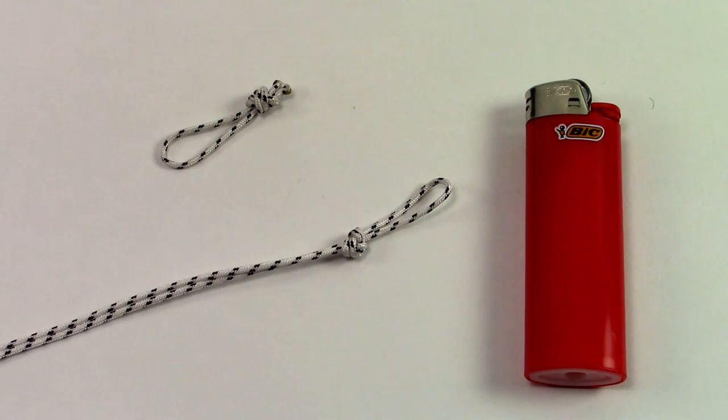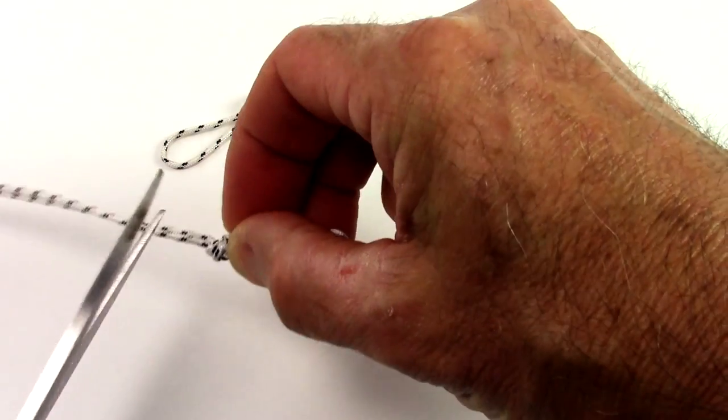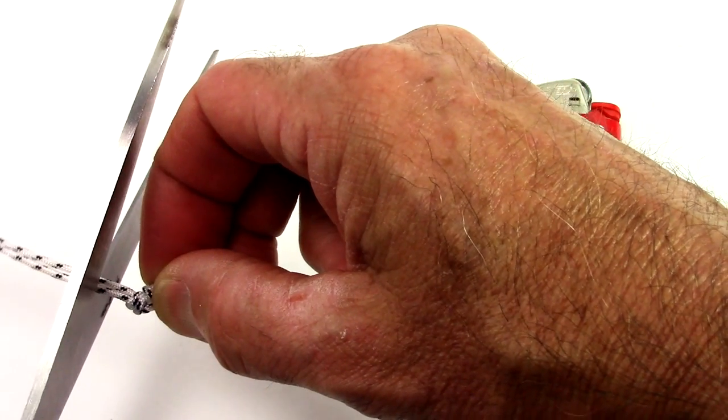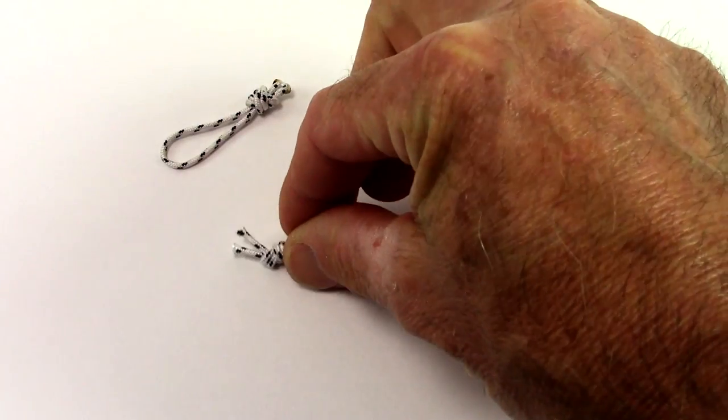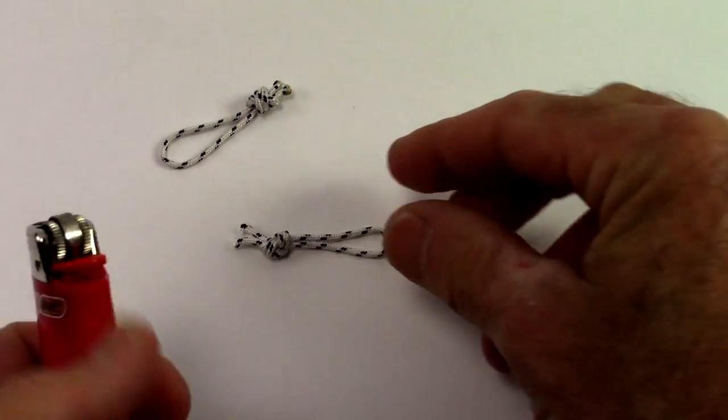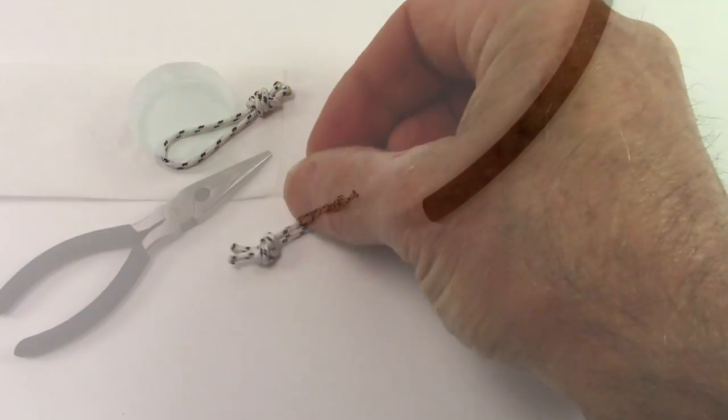Using a figure 8 knot, you will want to create two wishbone loops using the 1.5 millimeter Dyneema cord. Create a loop approximately 1 and a half inches long. Make sure to pull the knots very tight. Trim the loose ends short and carefully melt the ends.